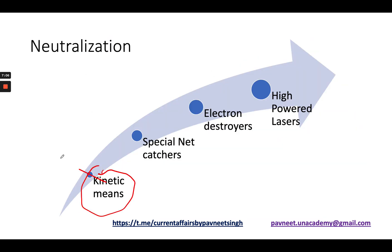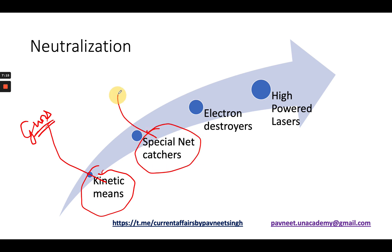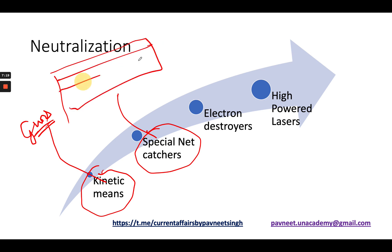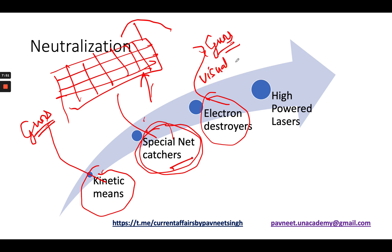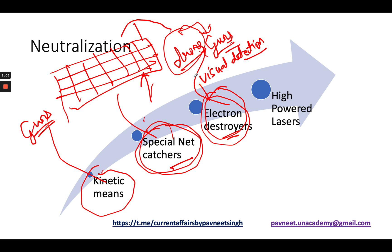For neutralization, the first option is kinetic means — we can use guns to shoot down Pakistani drones. Similarly, we can use special net catchers deployed at the boundaries to prevent drone entry, though their utility is limited since drones can fly above these nets. Third is electron destroyer guns, produced by advanced countries like France, Israel, and the US — we can buy these. Once a drone is visually detected entering our territory, electron destroyers interfere with the drone's internal functioning and thereby destroy it on the spot.